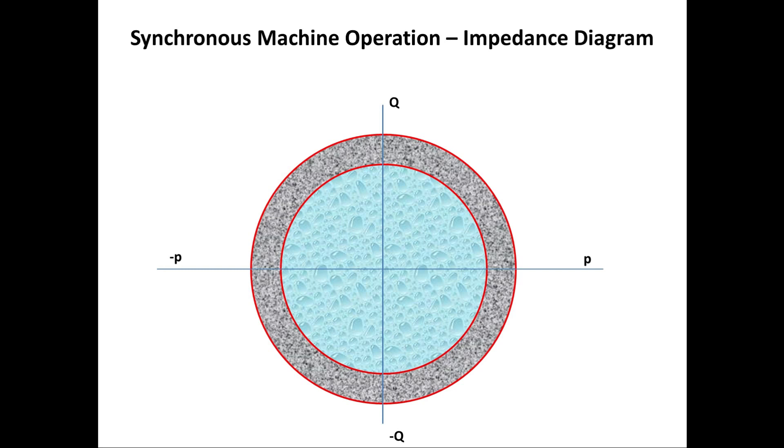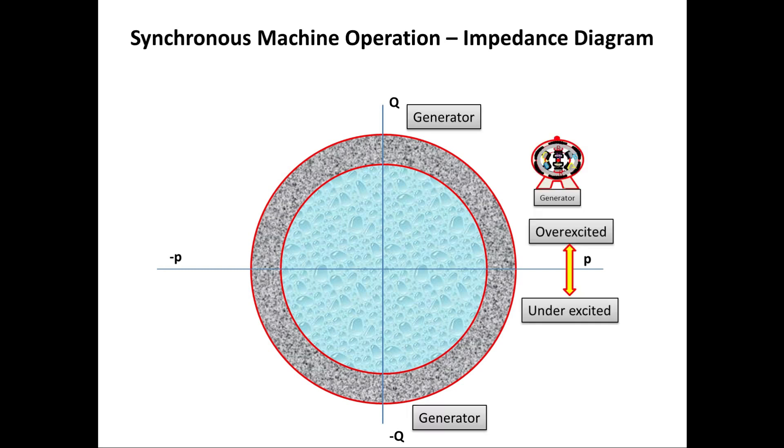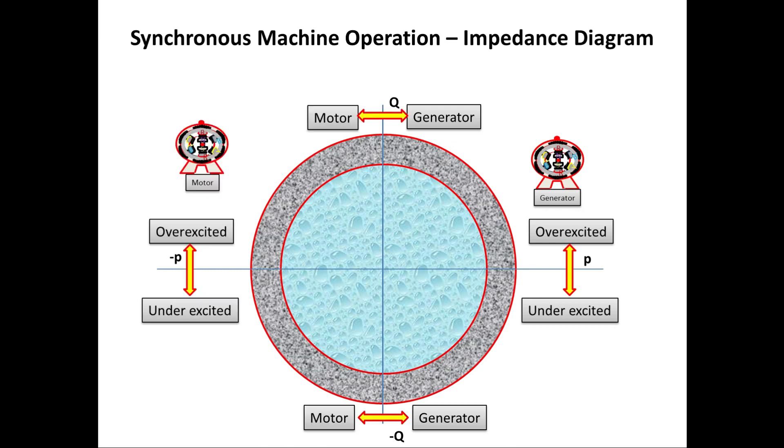First we will see the generator and motor operating area. The working of generator is to give power. So for generator the power always in positive. According to this, the first quadrant and fourth quadrant belong to the generator characteristics.